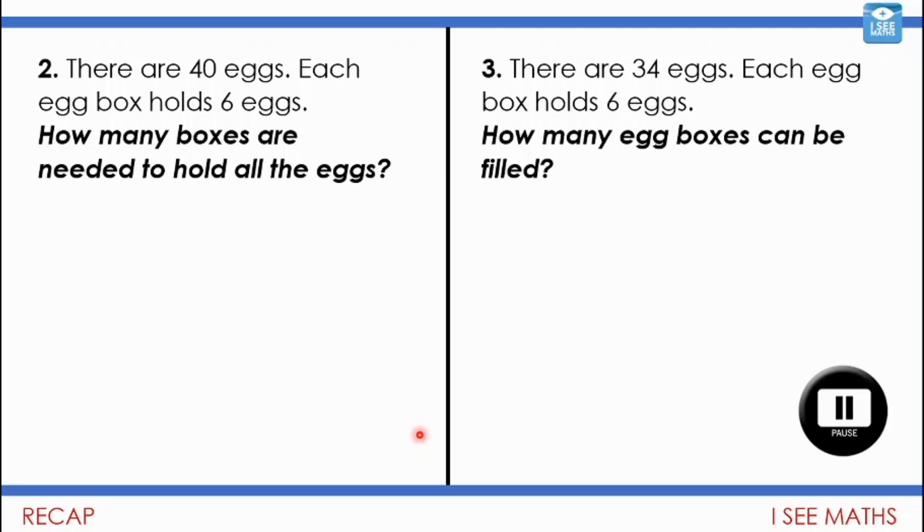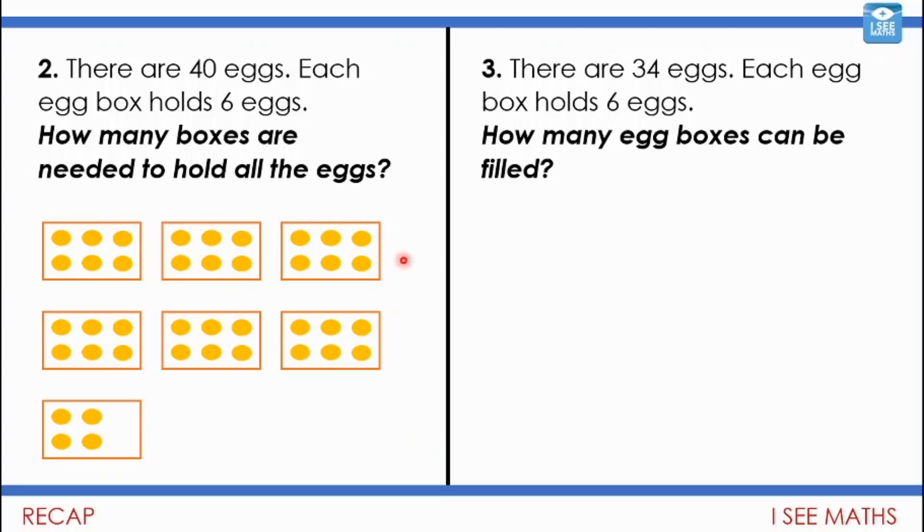Okay, let's have a little look again. So the example on the left, well there are 40 eggs. Each egg box holds 6 eggs. How many egg boxes do we need in total? Well we need these 6 egg boxes to hold 36 eggs. 6 lots of 6 is 36. And then we need this other, the 7th egg box to hold the last 4 eggs. So how many boxes are needed? Well 7.